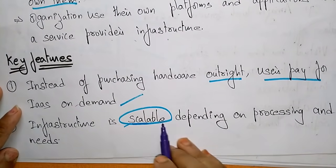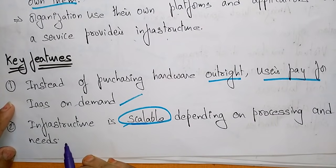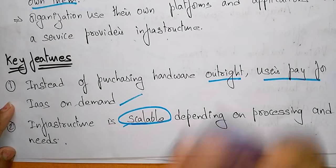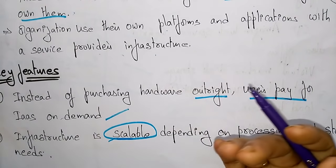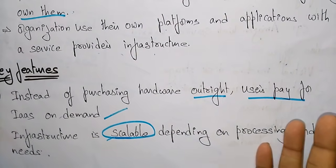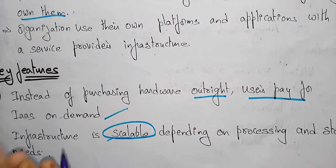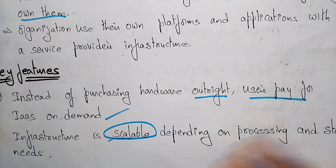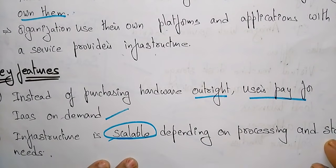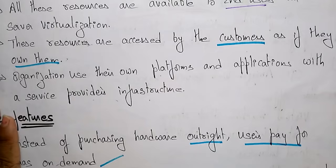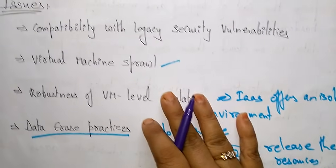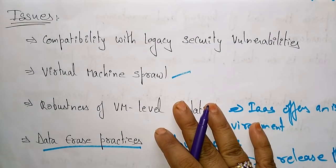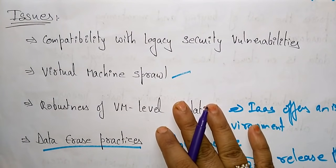The infrastructure is scalable depending on processing and storage needs. Scalable means based on usage you can pay accordingly — if you are using less, you pay less; if you are using more, you pay more. It is completely scalable depending on processing and storage needs.